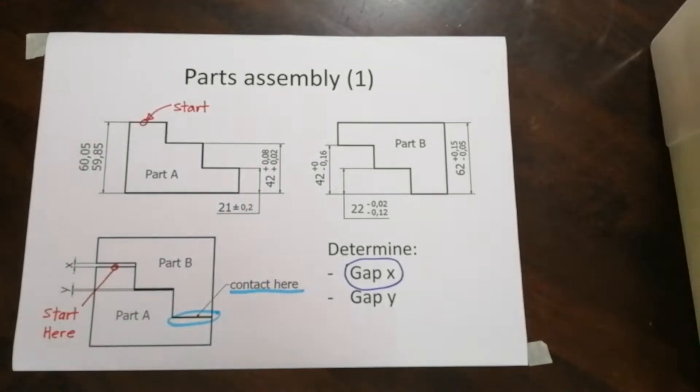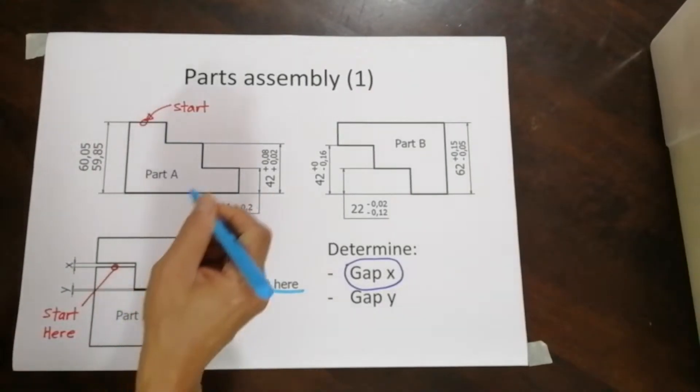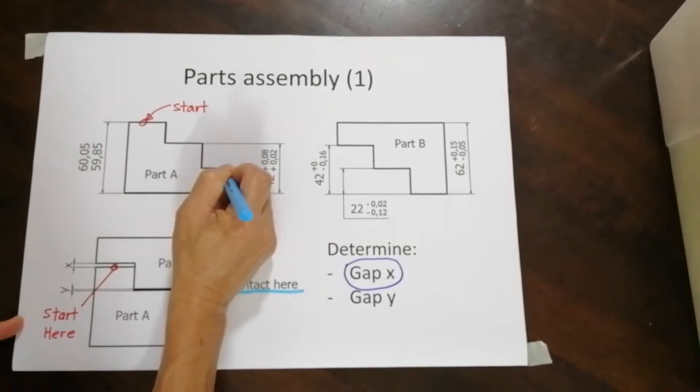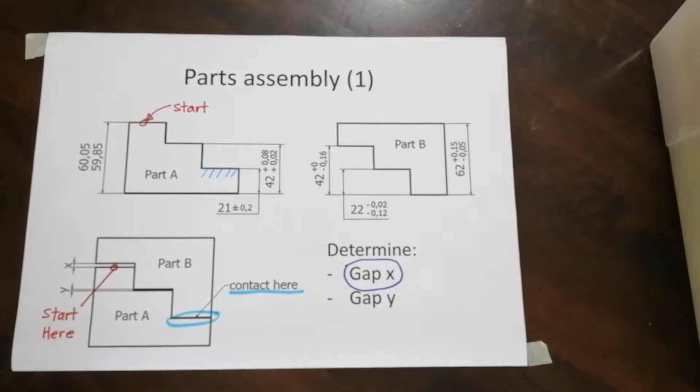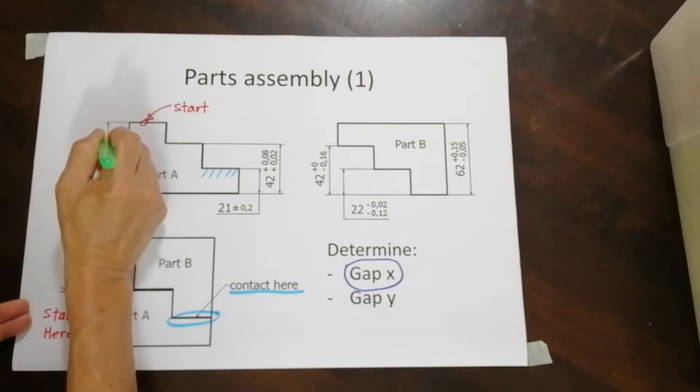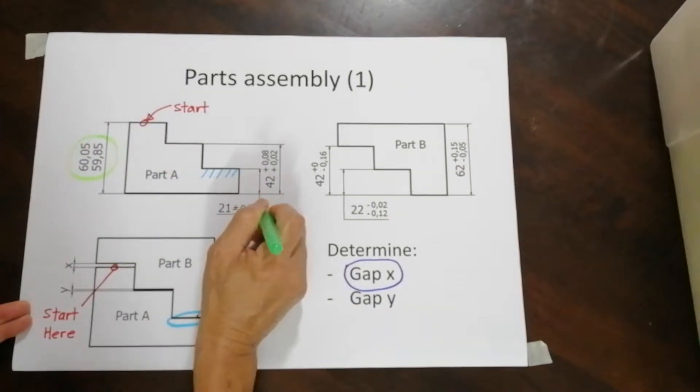So from A, I need to get to B. So the dimension I am able to get to is... Let me just highlight here, the contact point is here. I need to get to that. So the two dimensions involved are basically this dimension and this dimension.